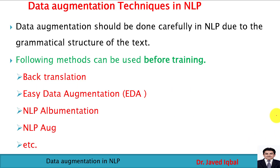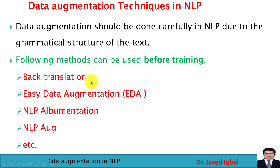This slide shows different types of techniques that can be used in data augmentation. These techniques should be applied very carefully while working on textual data, as we have a specific grammatical structure. Most researchers apply these techniques on the training data only. The different types of techniques are: back translation, easy data augmentation, NLP albumentation, NLP aug, etc.